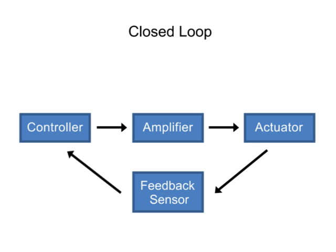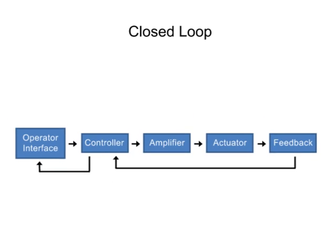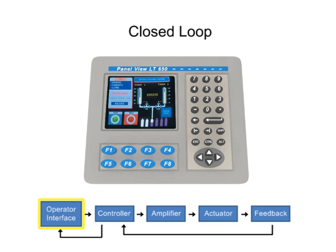A closed-loop motion control system is comprised of the following elements. The operator interface allows the user to command signals to the controller. Examples of an interface are industrial computers or an operator interface terminal.